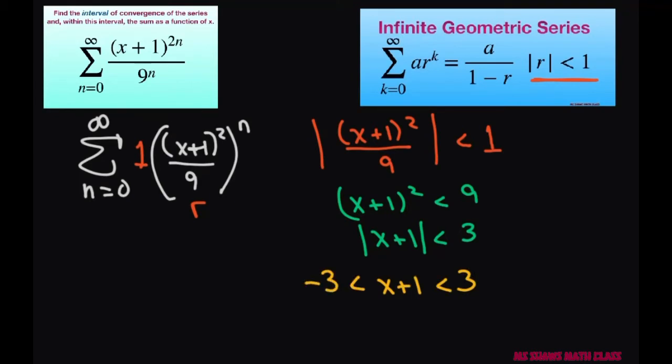That means by definition this means x plus one is less than three but greater than negative three. So when I subtract one from both sides or all three parts to solve for x, that's going to give me negative four is less than x is less than two.